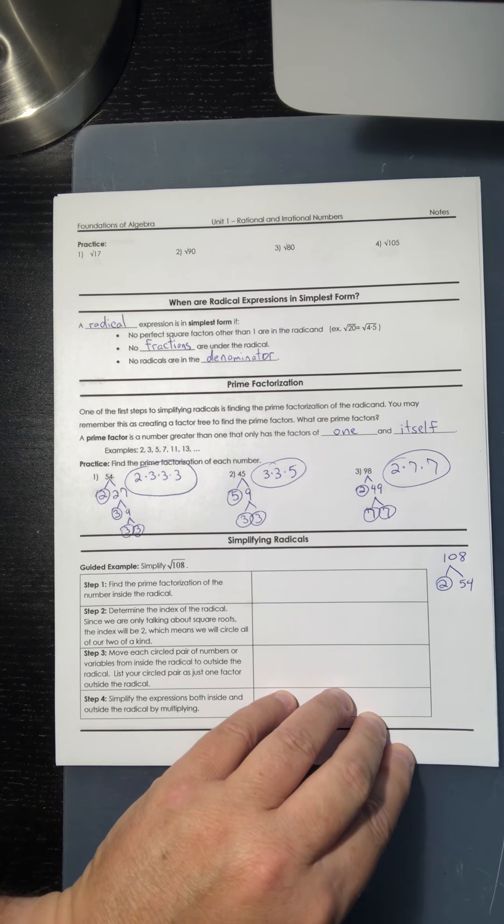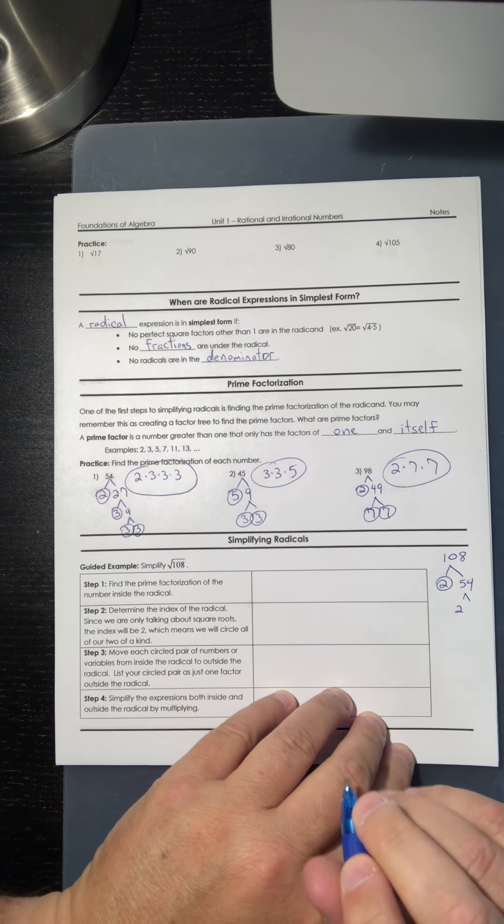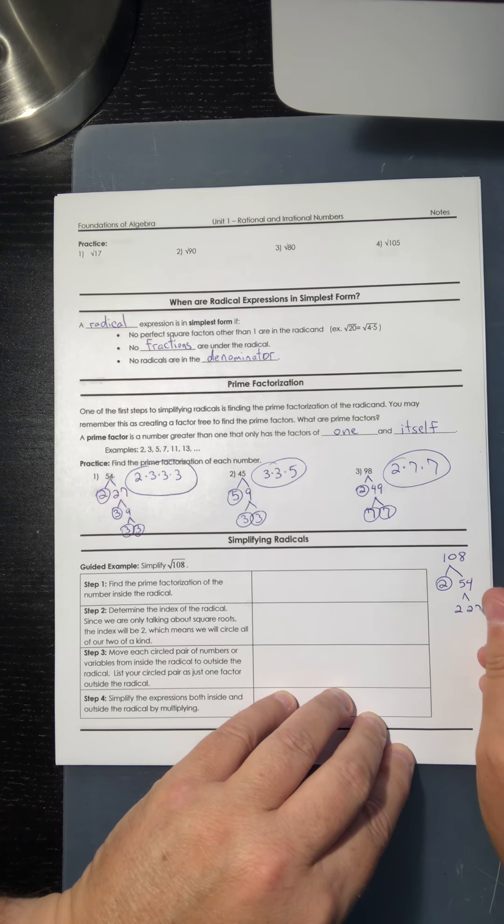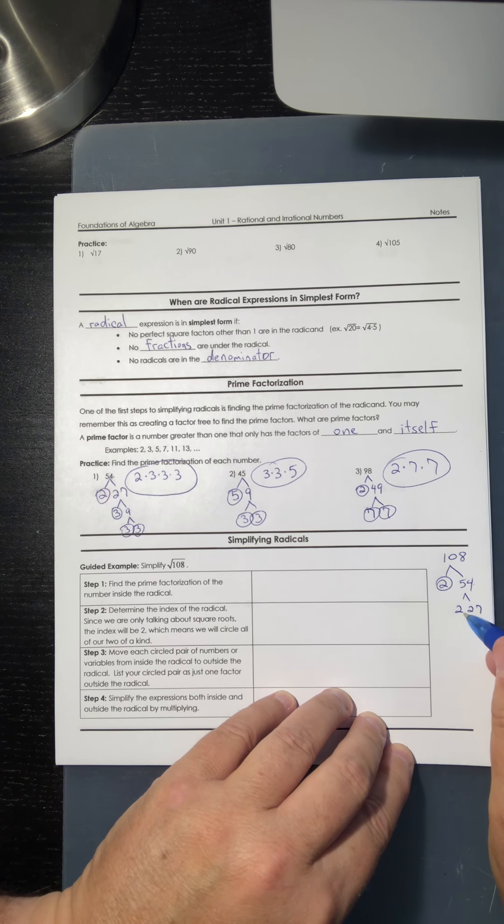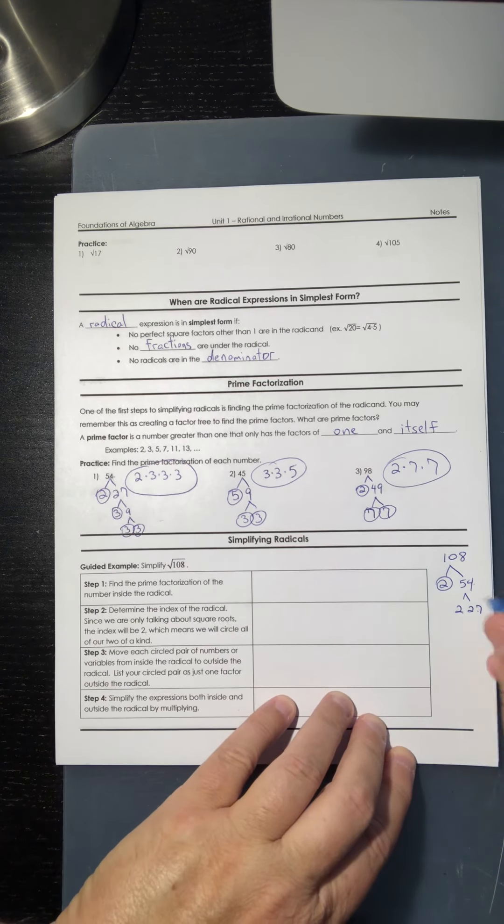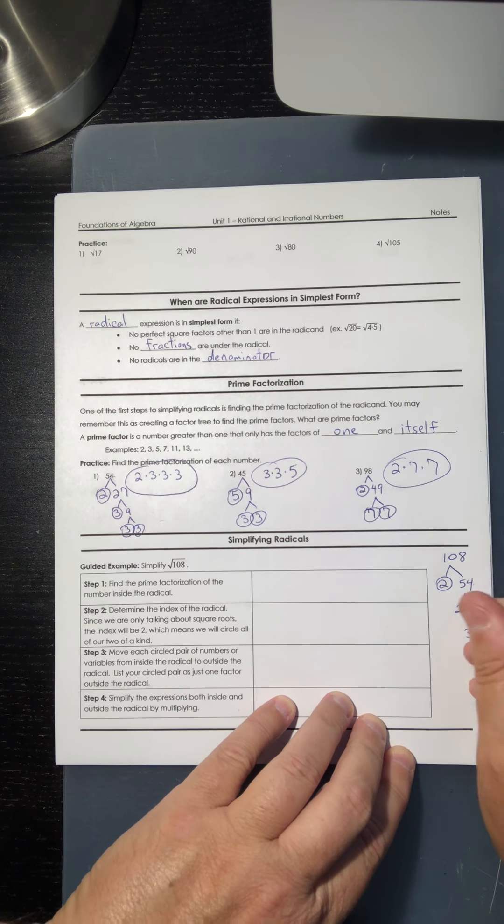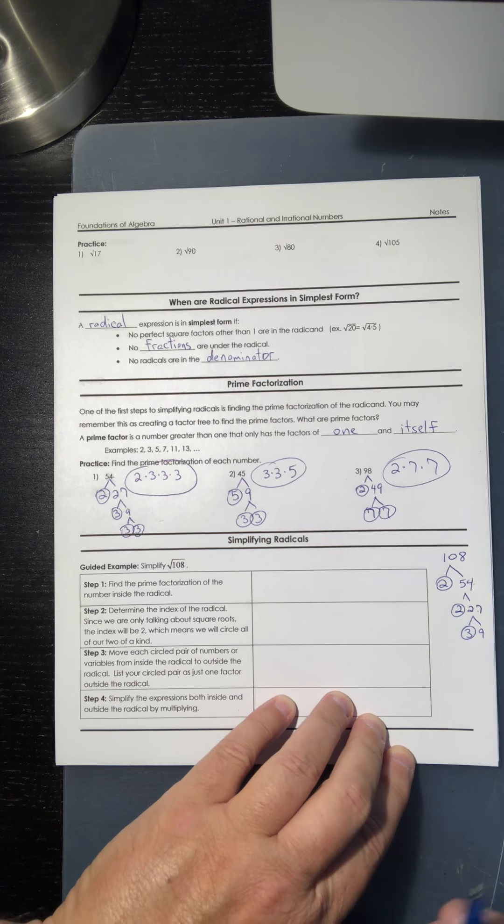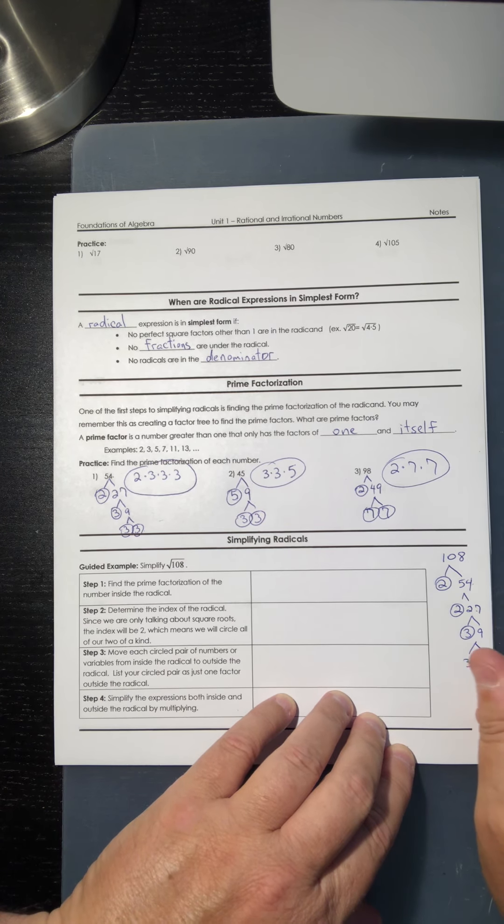So now I got to do 54. Well, 54 is an even number, so 2 goes into it times 27. And if you didn't know that, you would do 54 divided by 2, and it would give you 27. Well, remember we'd already done 27 on this first practice one, and 27 broke down into 3 and 9. So there's a prime factorization, and then 9 broke down into 3 and 3.